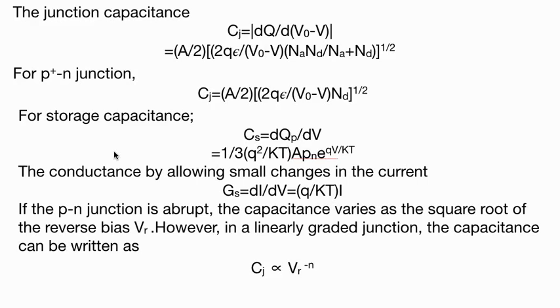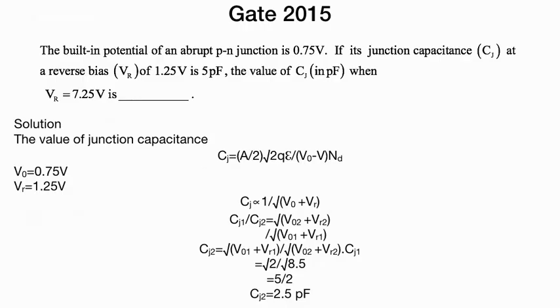So moving forward, we get the junction capacitance is directly proportional to V_r to the power minus n. If we look at one of the questions in 2015 on junction capacitance itself, where different biasing is being done across the capacitance.